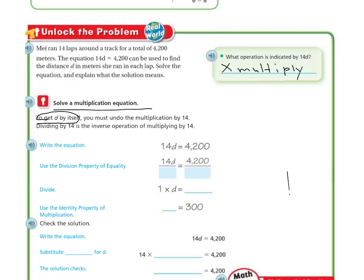So if I write my equation, I've got 14D equals 4,200. If I divide both sides by 14, I get rid of that and I'm left with just my D. And then 14 is going to go into 4,200.